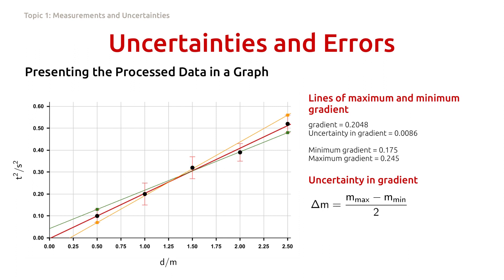From this, we can calculate the uncertainty in gradient by using this formula. Maximum gradient minus minimum gradient divided by 2. Plugging the numbers yields 0.035 is uncertainty in gradient. At this point, we should not compare this value to the value provided by Google spreadsheet because they use different method and do not include the error bars when calculating the uncertainty in gradient. However, we know that this uncertainty should be reduced. The idea is that the line should go through all the error bars.